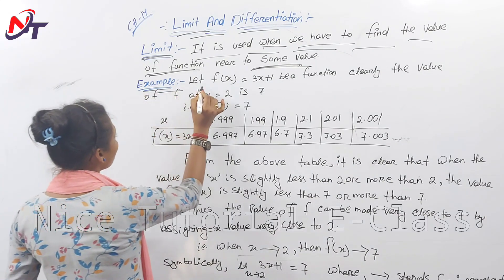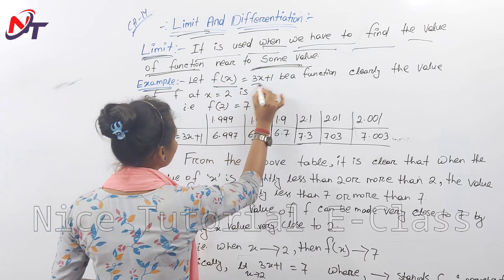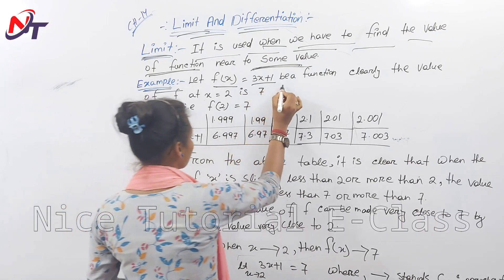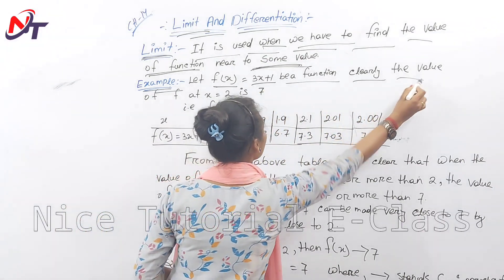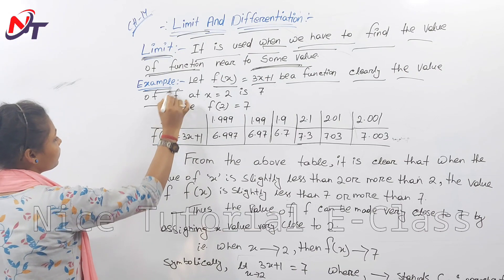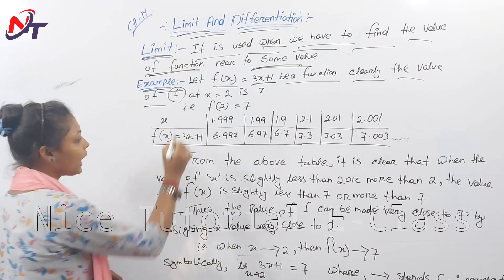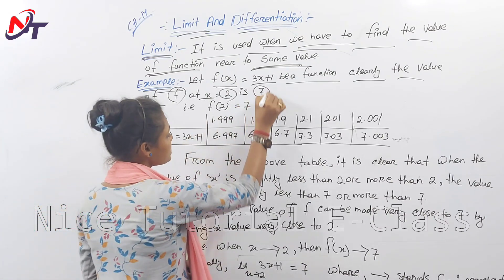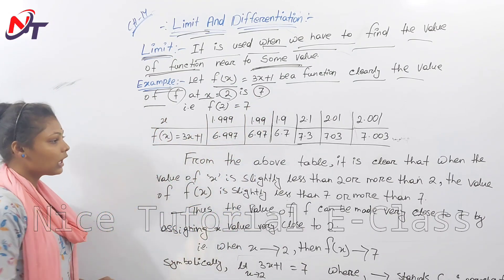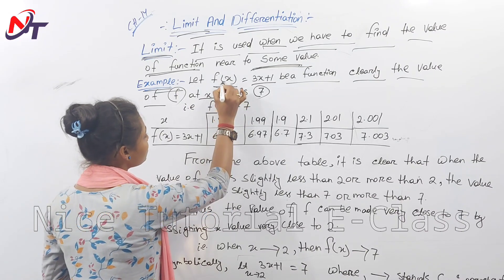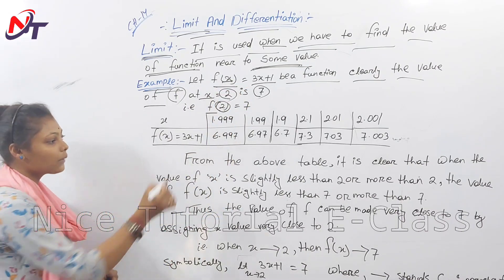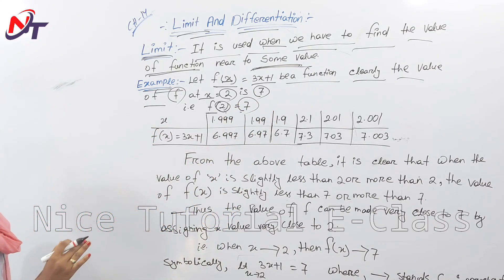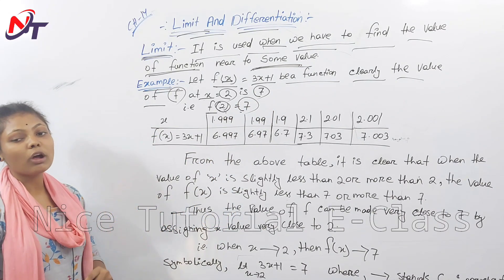For example, let f(x) = 3x + 1. Clearly, the value of f at x = 2: f(2) = 3(2) + 1 = 7.